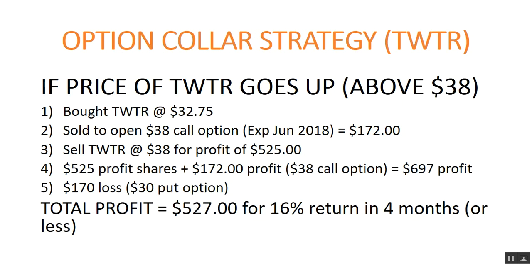Now, if the price of Twitter goes up — this is our best case scenario — and it goes above $38 a share: we bought Twitter at $32.75, we sold to open a $38 call for $172 expiring in 111 days. What happens is we end up selling Twitter at $38 for a profit of $525 per share. Add the $172 from the call option and we get $697. We do have to subtract the money we will lose on our put option — about $170 between now and the next four months if Twitter goes above $38.